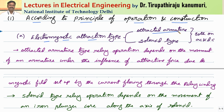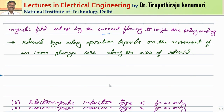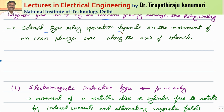The first one is the attracted armature type — whenever a coil is energized by a current, it will attract some iron bar. The second one is called the solenoid type. Both these types can operate for AC or DC. The attracted armature type relay operation depends on the movement of an armature under the influence of attraction force produced due to the magnetic field set up by the current passing through the relay winding.